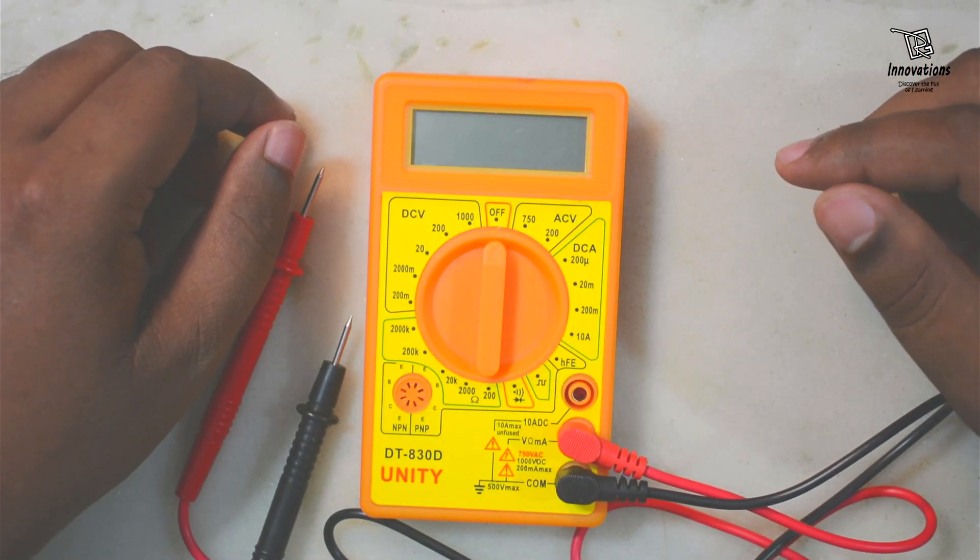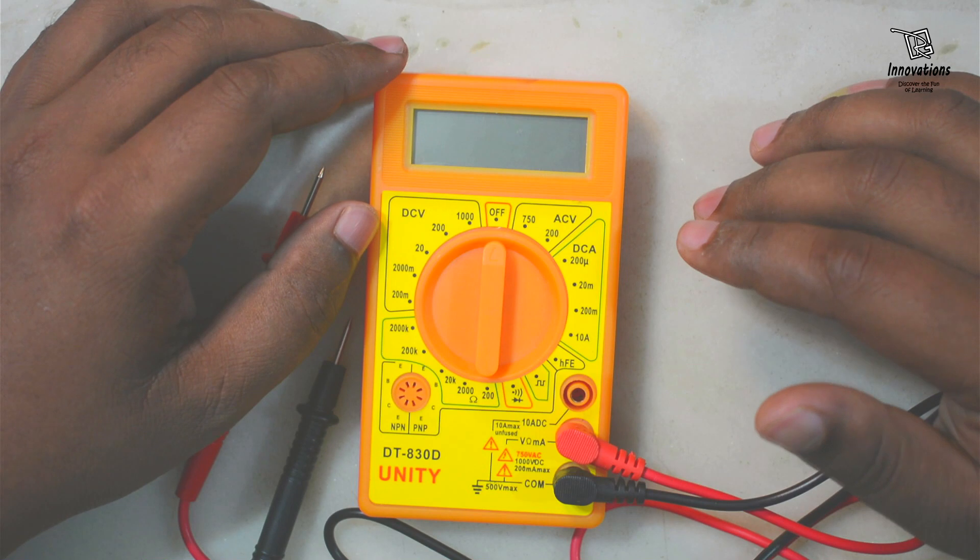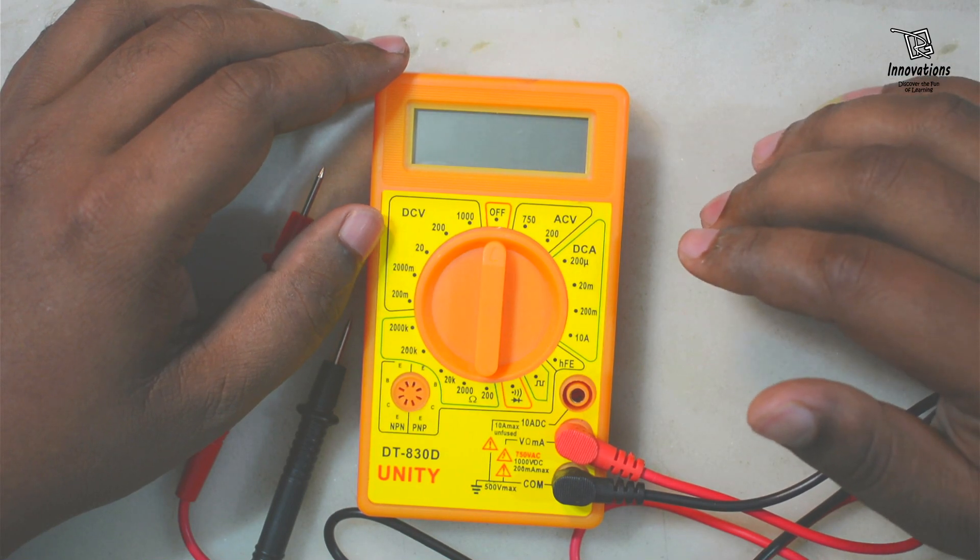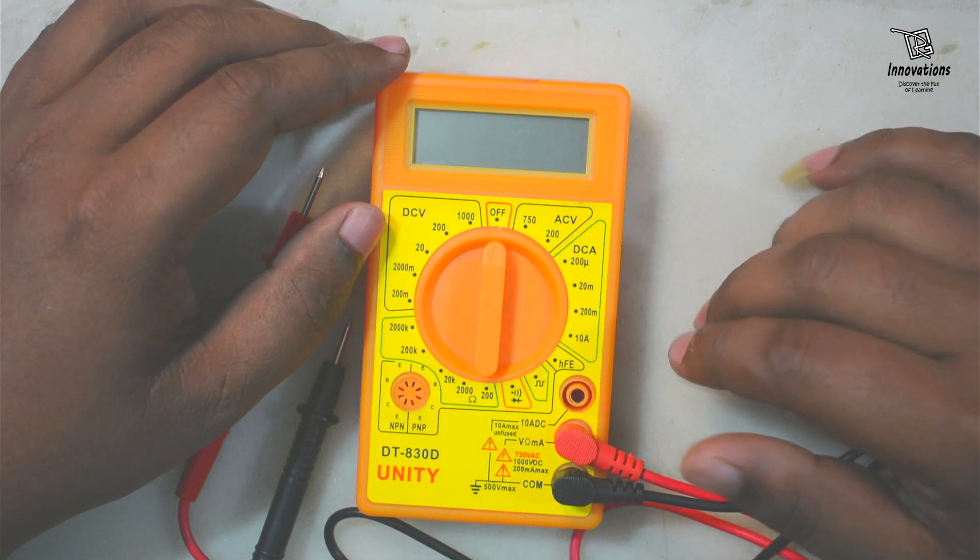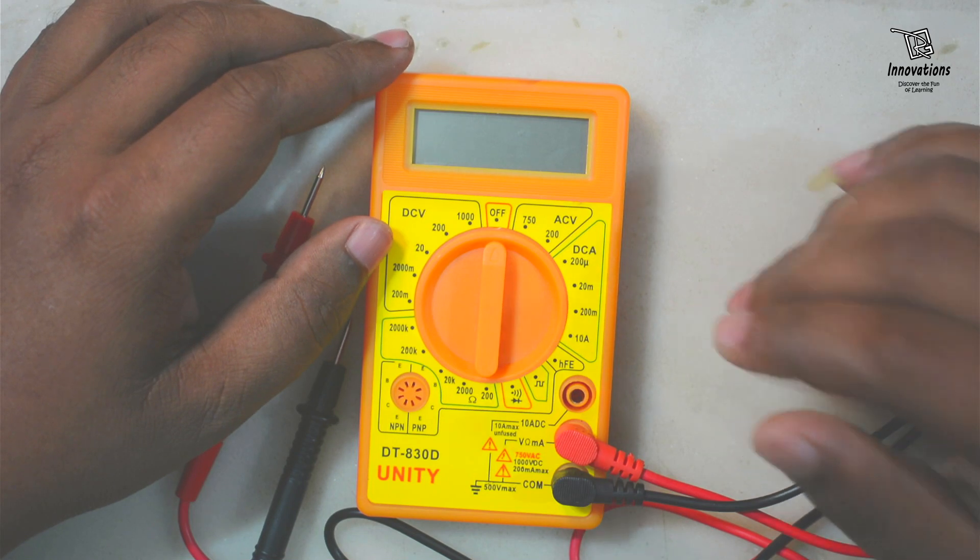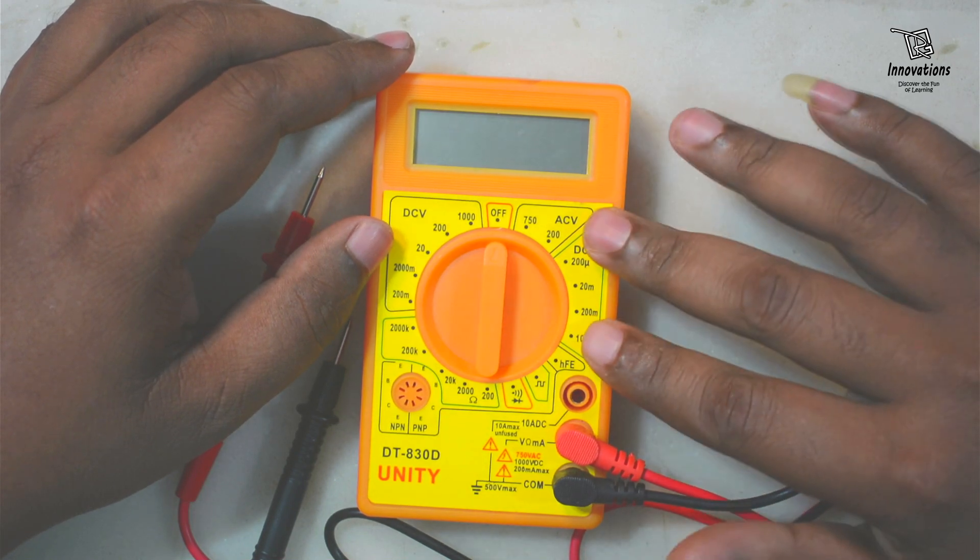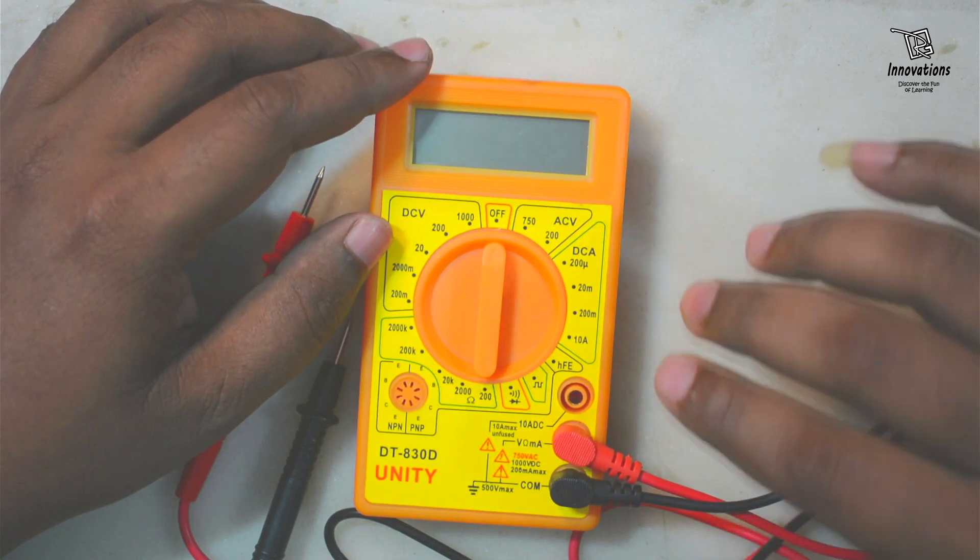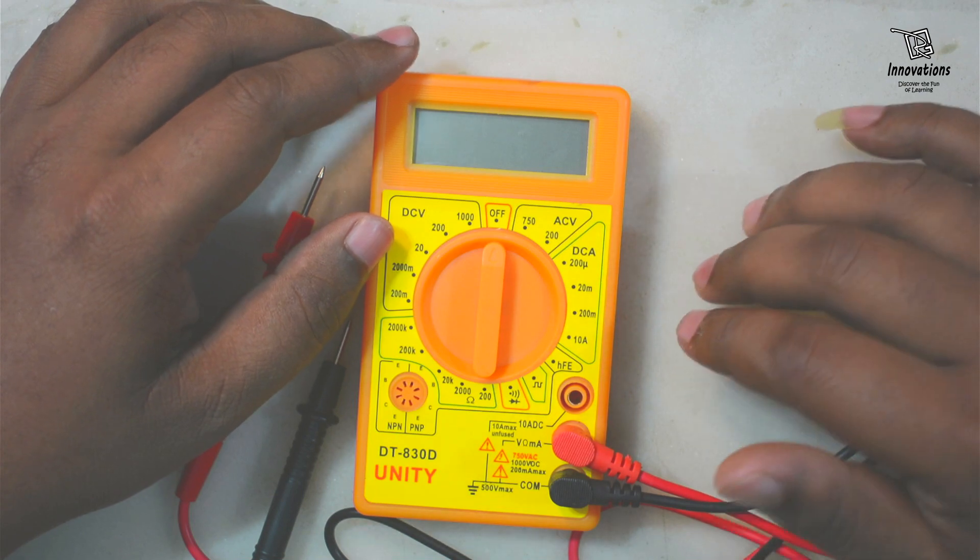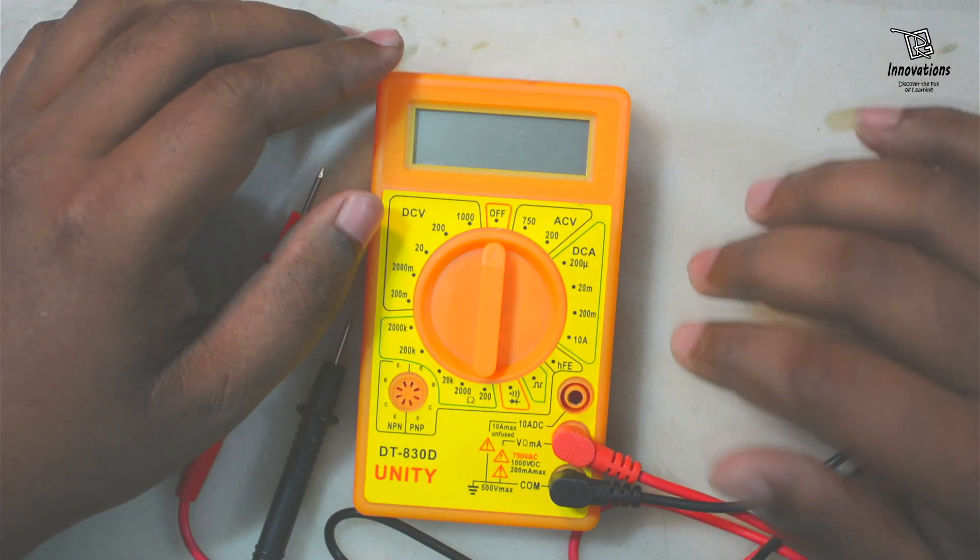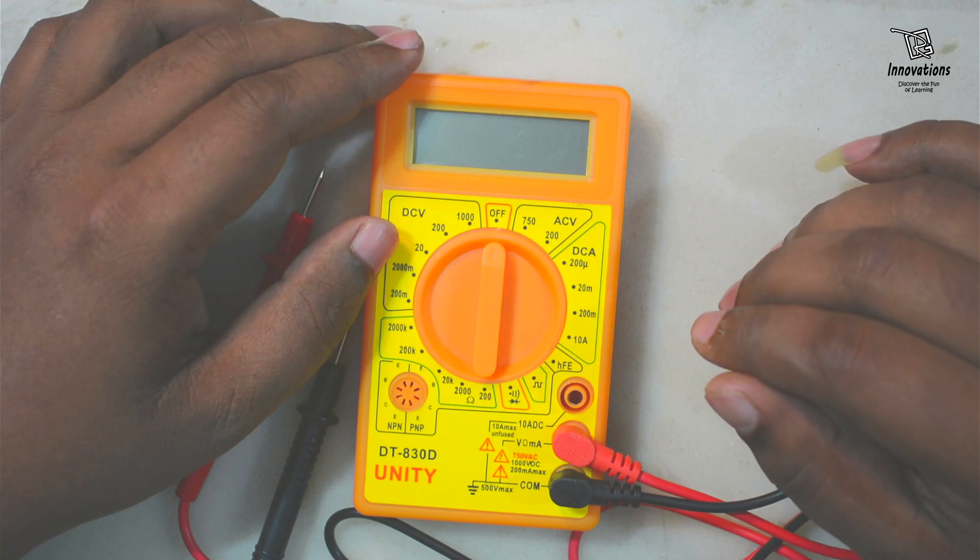In my previous video, I showed you how to use a multimeter, how to check different components and measure different values with all the settings. But today I am going to discuss a feature of these types of multimeters which nobody says in their tutorial. Nobody wants to discuss it. I don't know why, but everybody skips that feature of the multimeter.